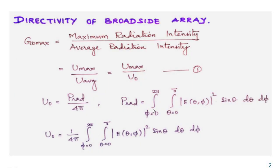First we will discuss about how to derive directivity of a broadside array. The directivity formula is equal to maximum radiation intensity divided by average radiation intensity — that is U_max divided by U_average. This can be written as U_max divided by U_naught, where U_naught is equal to power radiated divided by 4π.